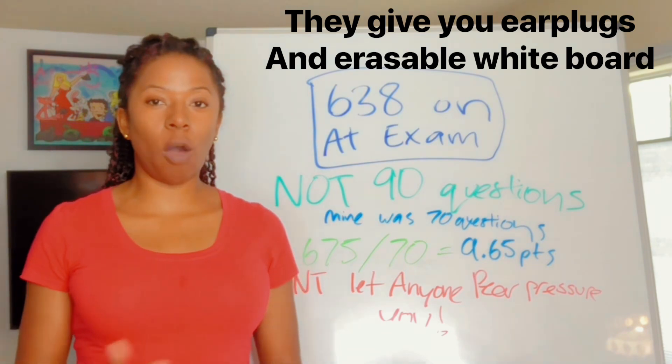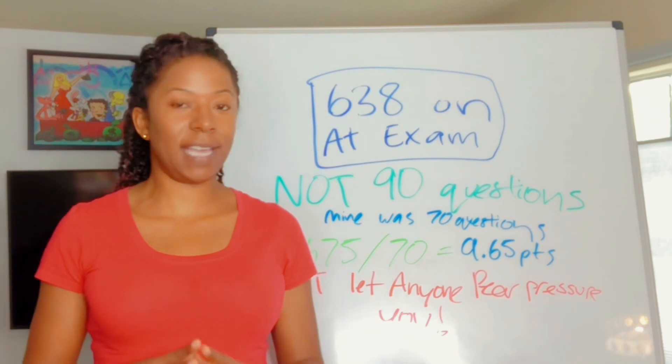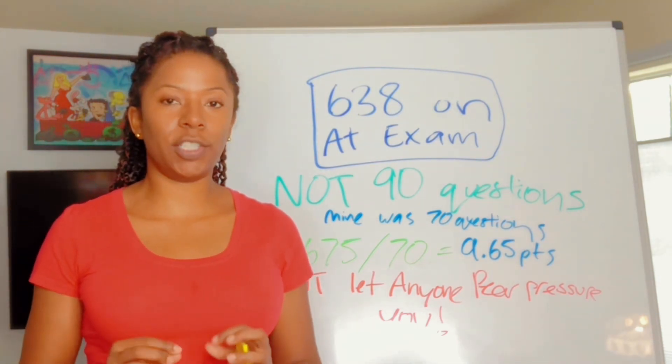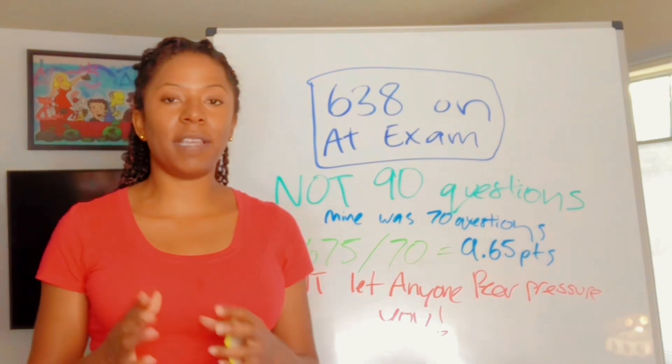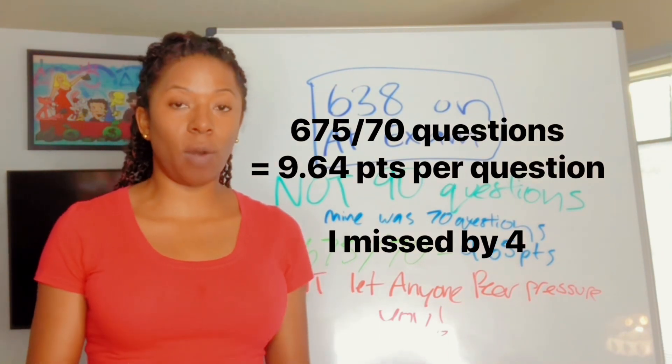Now, everybody online, even Google, swears that CompTIA A Plus Core 1 is 90 questions. They gave me 70 questions, and they told me that in the beginning. So, I already knew that that gives me a lower ratio of wiggle room of how many questions I have to get right.